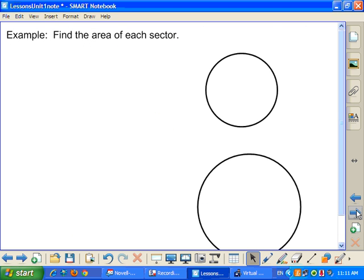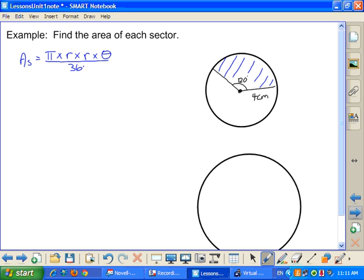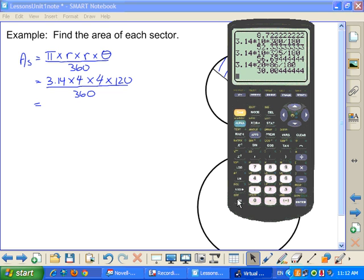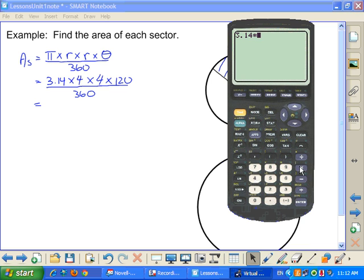So I want to find the area of each sector. So an example would look like this. So we'll say 4 centimeters and an angle of 120 degrees. So we'll find the area of each sector. So we are looking for the area of a pie piece. So that means you need to know to go to your formula sheet and get the correct formula: pi times R times R times theta over 360. And we end up with 3.14 times 4 times 4 times 120 divided by 360.